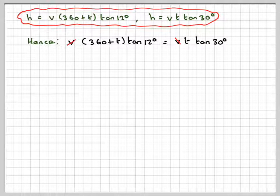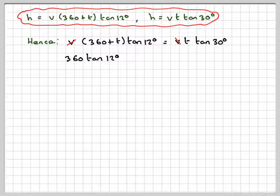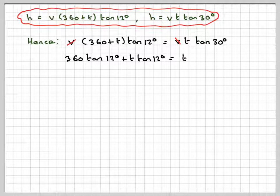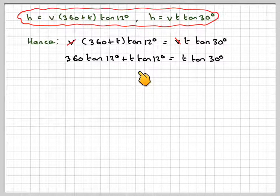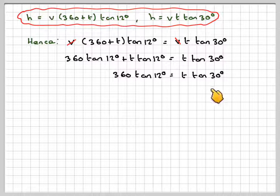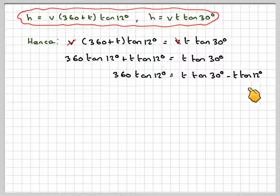Expanding here, we get 360 tan 12° plus t tan 12° equals t tan 30°. We're trying to find t, so we need to collect all the t's on one side. So we've got 360 tan 12° equals t tan 30° minus t tan 12°.